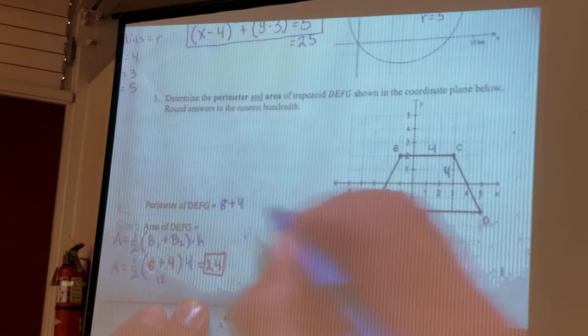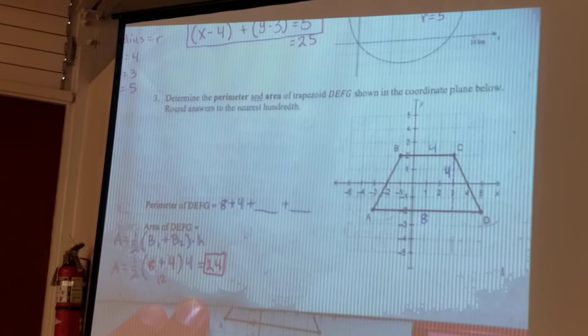But then I don't know what the second two lengths are. All right, so I need to add up all four of these. So what are these diagonal lengths?